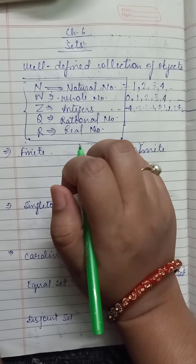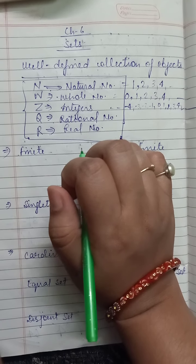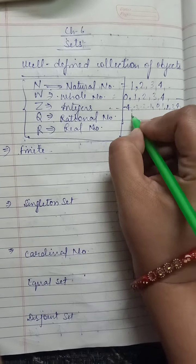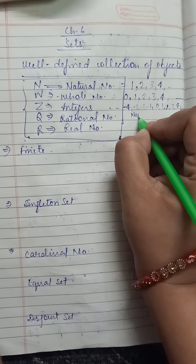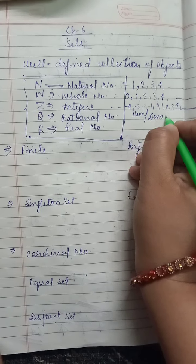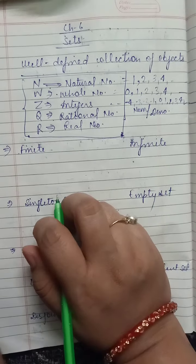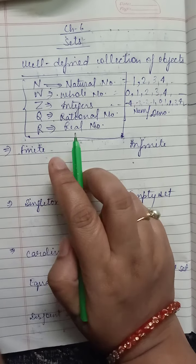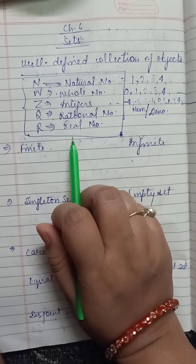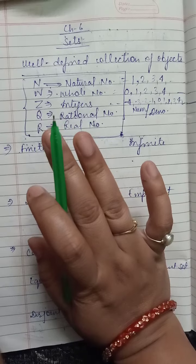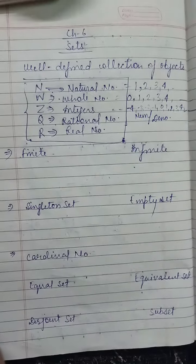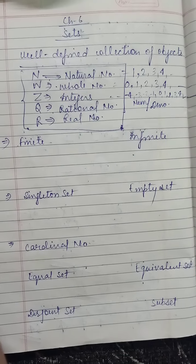Next we have rational numbers, which can be expressed in the form of numerator upon denominator. Next we have real numbers — all numbers that are possible are real numbers.